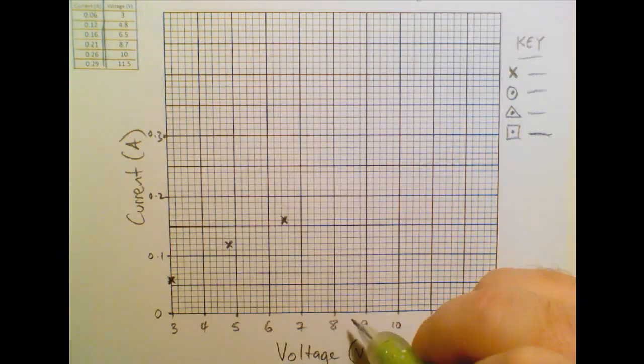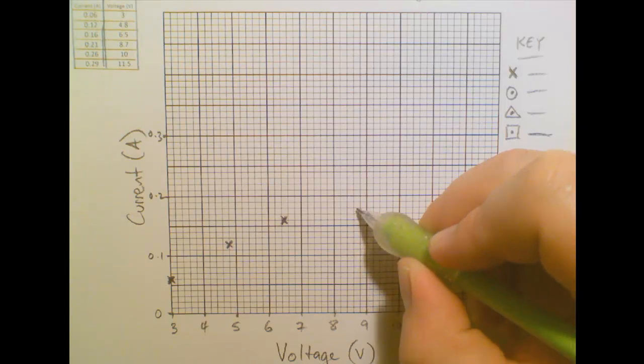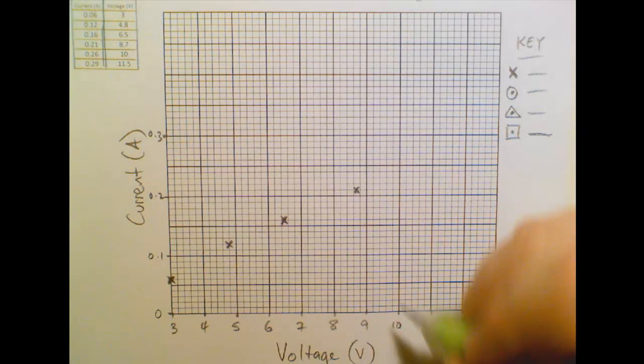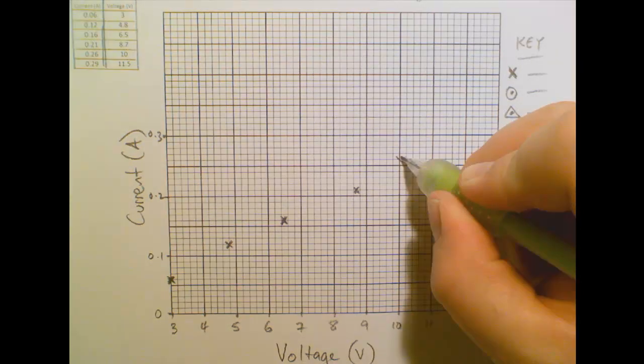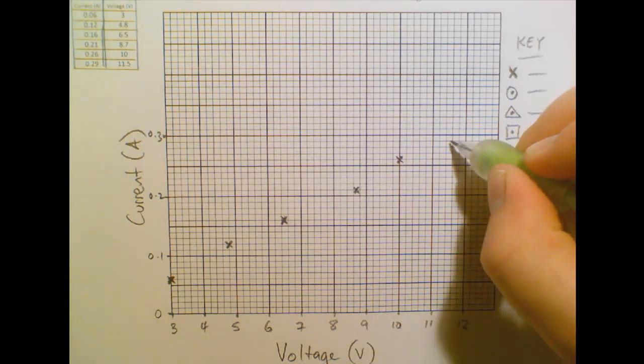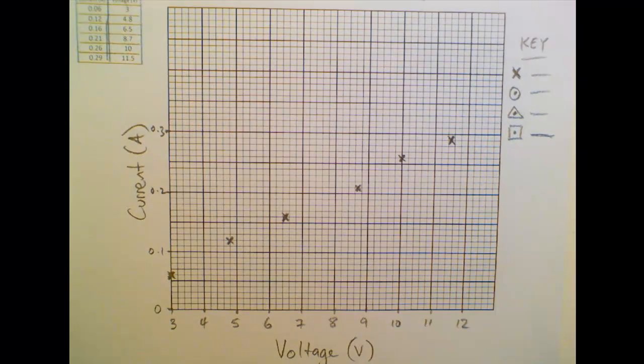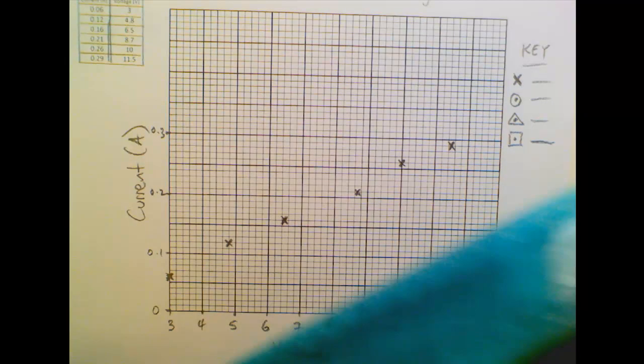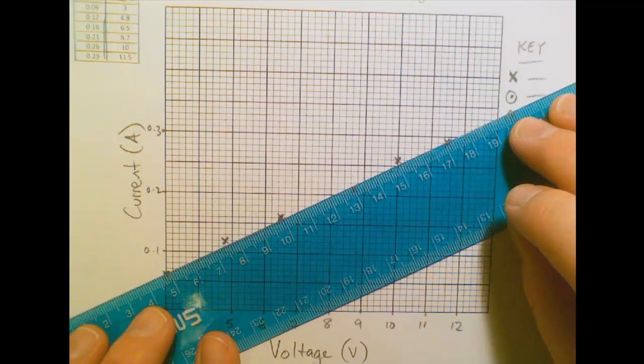And 8.7, so that's here. And 0.21, and 10, and 0.26, and 11.5, and 0.29. So there's all my points. And the centres of the crosses show pretty well where the points are.